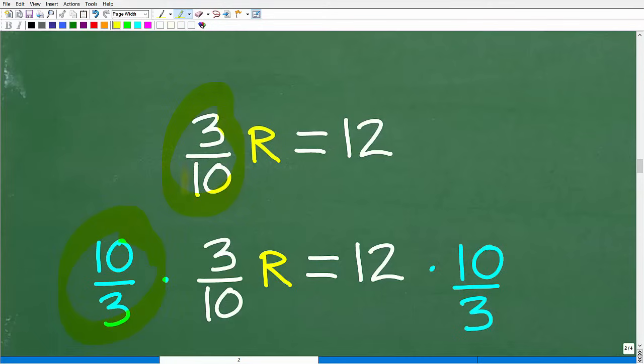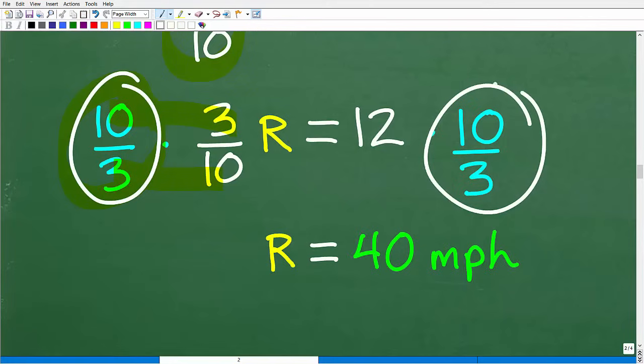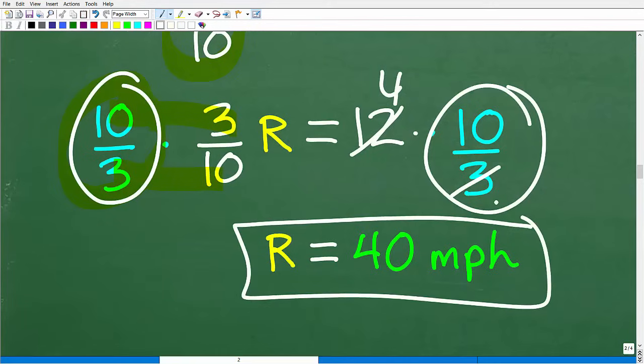So if the coefficient is a fraction, the best way to solve these type of equations is to flip this upside down. That's called the reciprocal. So we have ten-thirds times three-tenths. So when we multiply these fractions, ten times three is thirty, over three times ten is thirty, thirty over thirty is one. So one r or r. But if we multiply this side of the equation by ten-thirds, remember the basic rule in algebra is you have to multiply the other side as well. Whatever you do to one side of an equation, you have to do to the other. So we have 12 times ten over three. So ten over three times twelve. Three goes into twelve, four. Four times ten is forty. So our rate is forty miles per hour.